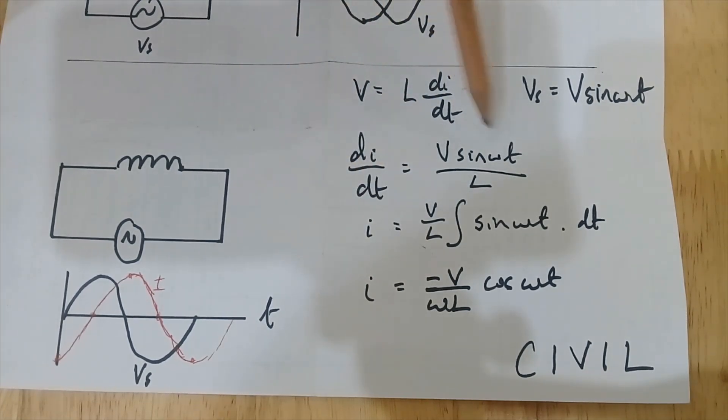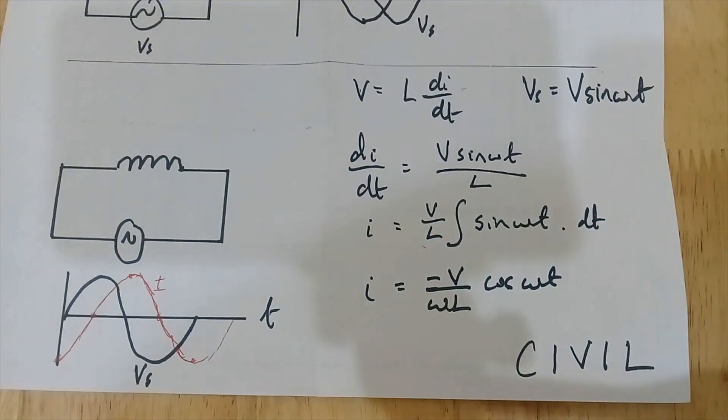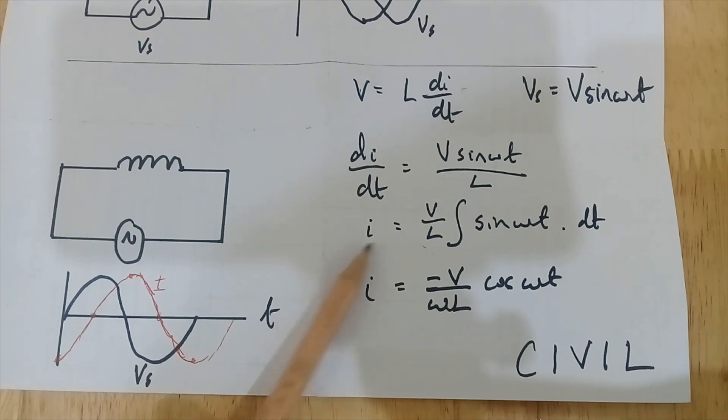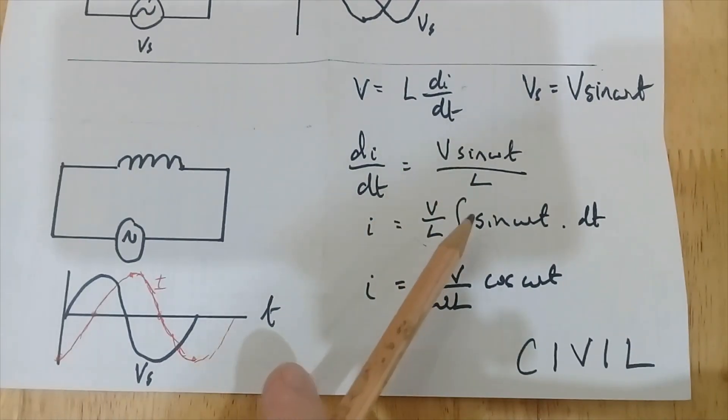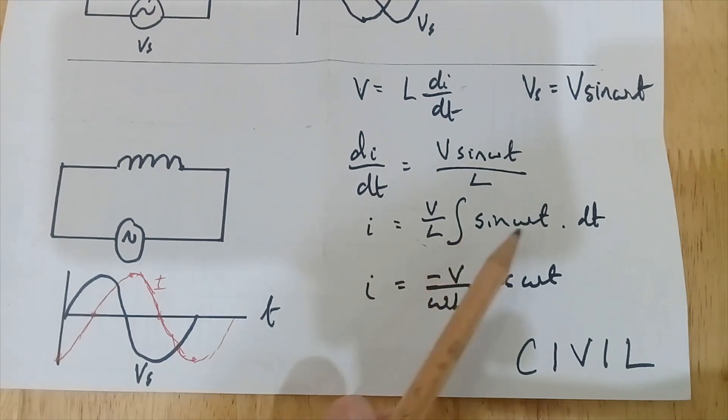Let's take this equation and rearrange it. Let's make di/dt the subject—that's what I've done there. Instead of V, let's call it V sin(ωt), so that's this part here.